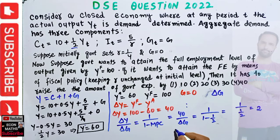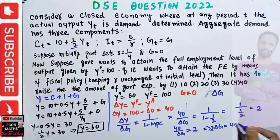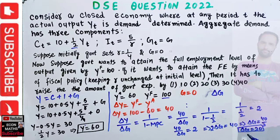We have 40 / ΔG = 2, which implies ΔG = 40 / 2 = 20. So the change in government expenditure should be equal to 20. To attain the full employment level of output of 100, the government should increase expenditure by 20 — initially it was 0 and now it should increase to 20.